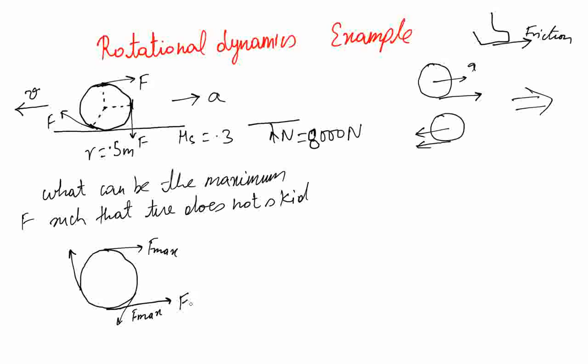Let's say the friction Fr is going to act. What is the maximum value of Fr that can be possible? It's 8000 multiplied by 0.3, which gives us 2400 Newtons. That is the best friction can do. If this is what friction can provide, and the mass of the wheel is M, then how much deceleration can it provide? It's going to be 2400 divided by M.